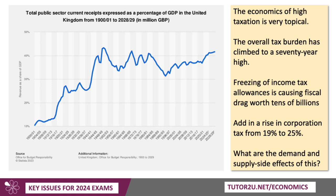My next topic is tax. This chart shows the tax burden, which is all taxes taken together — direct and indirect — expressed as a share of GDP, going back to the turn of the 20th century. You can see the tax burden has risen substantially and is now at a 70-year high. Lots of reasons behind this: the government has frozen income tax allowances — it's called fiscal drag — dragging in tens of billions of extra money into the exchequer. The government has also increased corporation tax from 19% to 25%. So what are the economic effects of a very high tax burden, and what are the demand and supply side consequences?